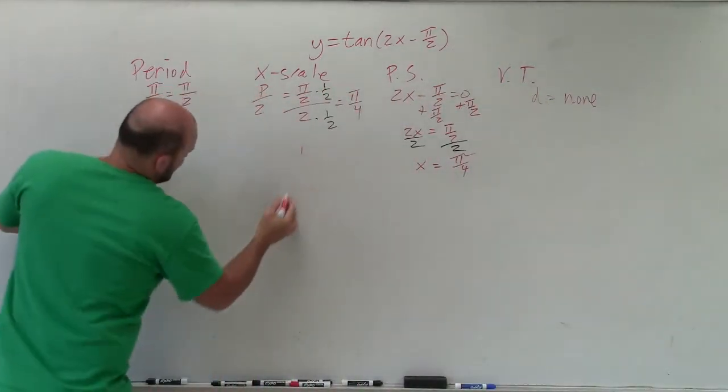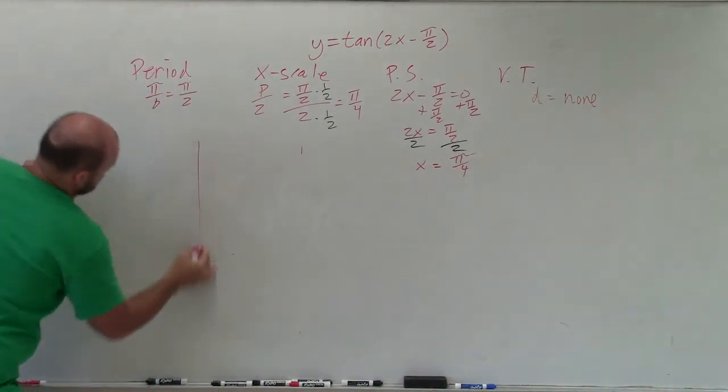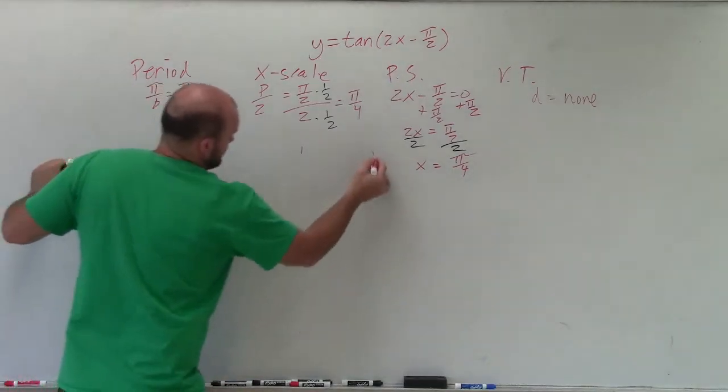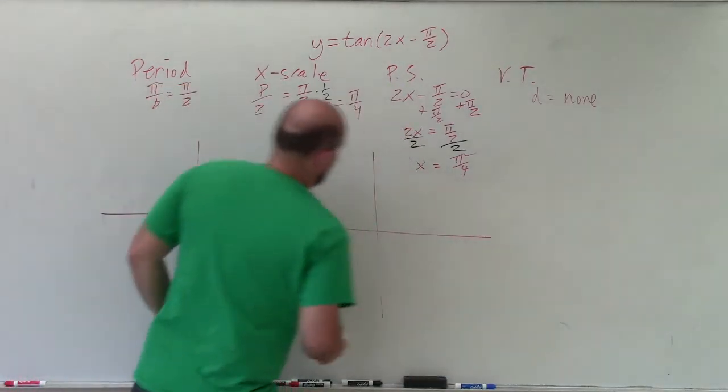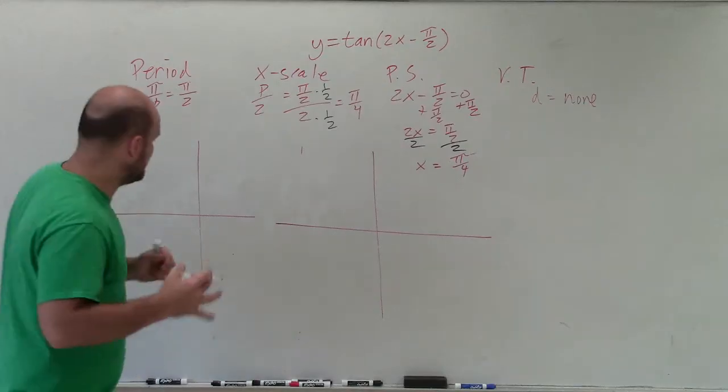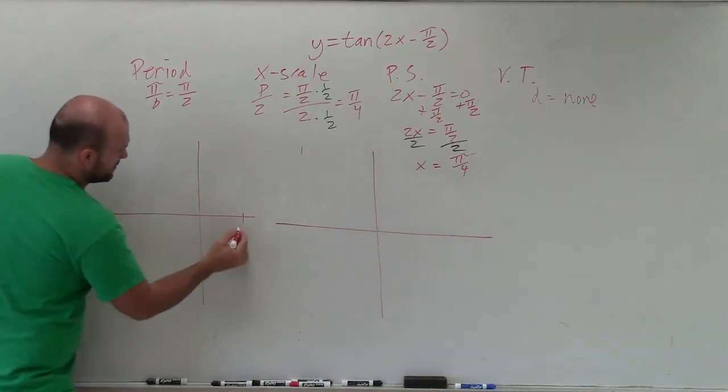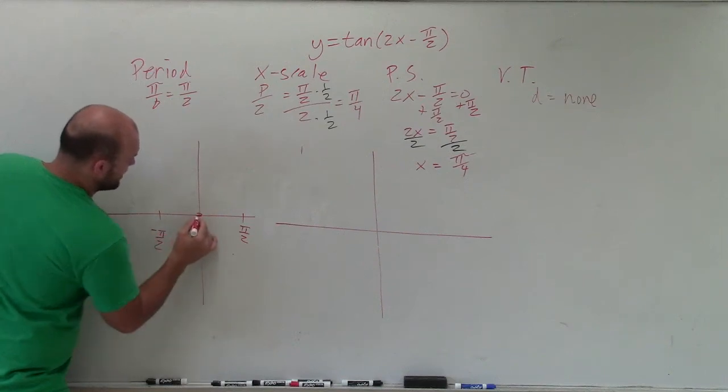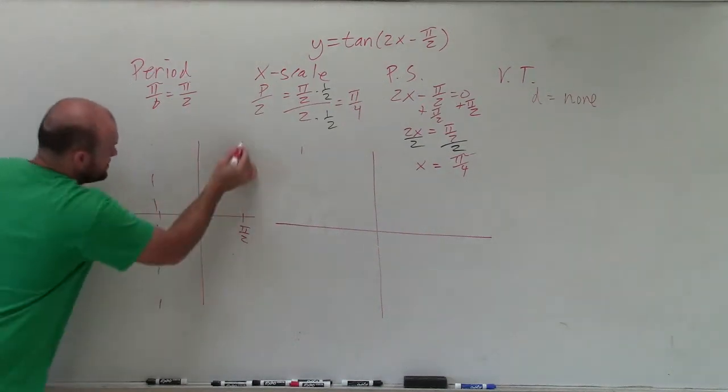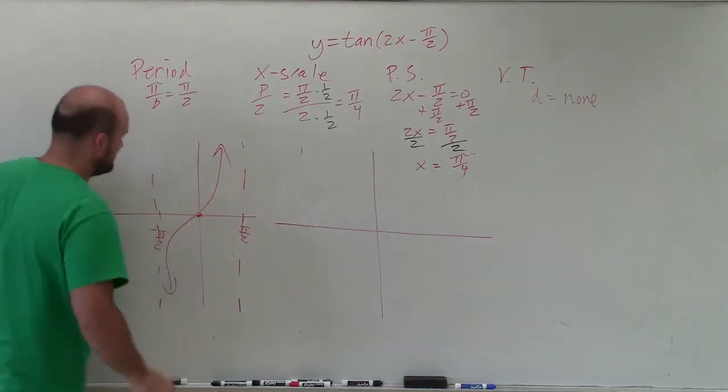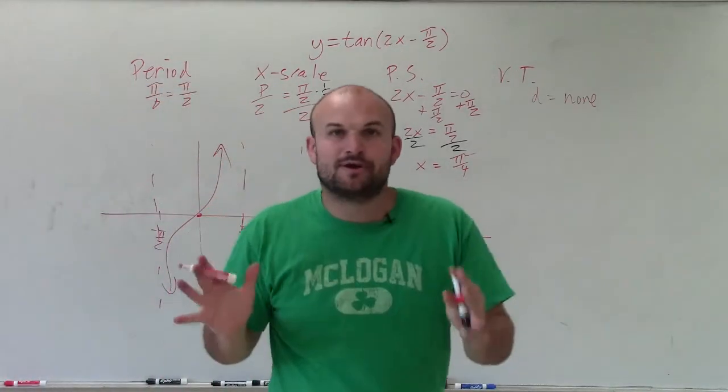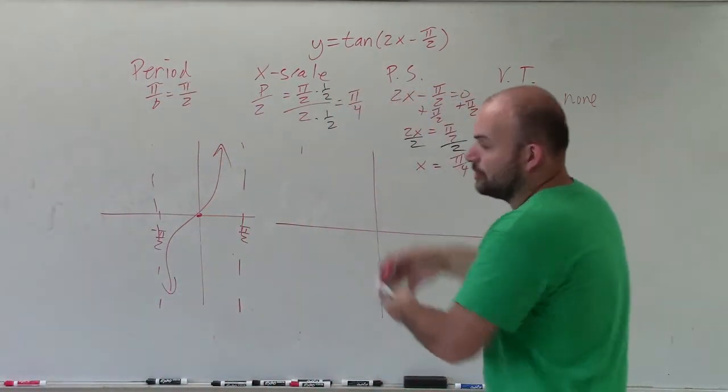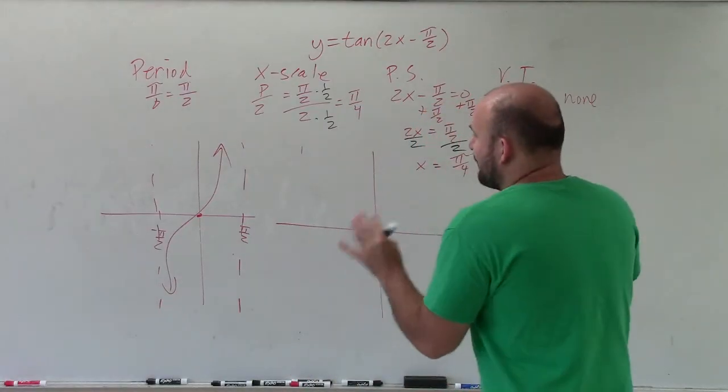All right, so typically when graphing tangent, we went from pi halves to negative pi halves. We crossed it 0, 0. Here was an asymptote. Here was an asymptote. And the graph looked like that. Very quickly, got to know what the parent graph is. That's probably in your book, in the notes, in the notes I provided.